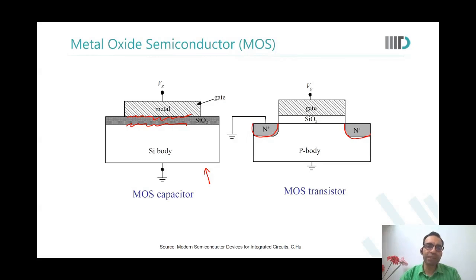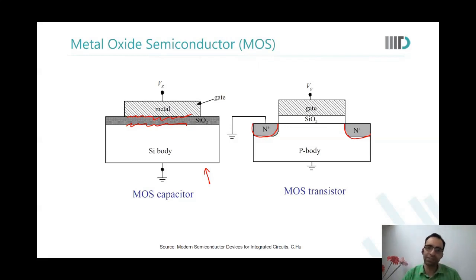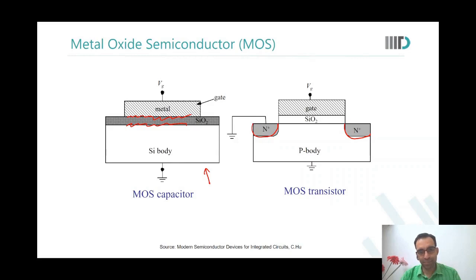When we bring metal, oxide, and semiconductor together, we brought them in contact with each other. So when they come in contact with each other, what happens at the interface? Basically, these three materials have different electron affinities. So when we bring them together, there has to be some rearrangement of charges that has to happen for the overall material to be stable or to have a uniform potential across if we are not applying any potential. So basically, band bending happens there.